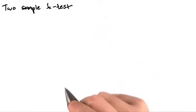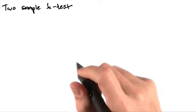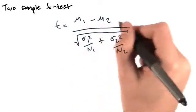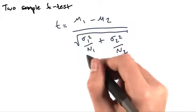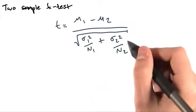In Welch's t-test, we compute a t-statistic using the following equation. t equals mu 1 minus mu 2 divided by the square root of sigma 1 squared over n1 plus sigma 2 squared over n2.